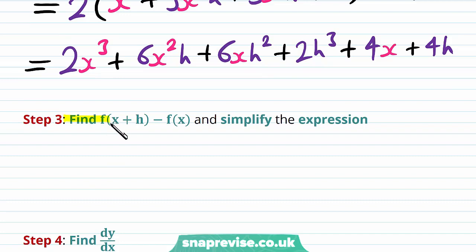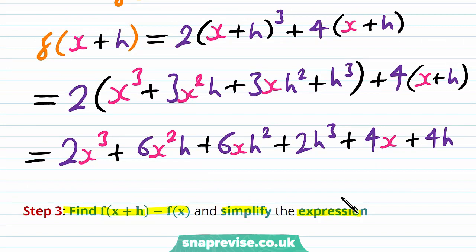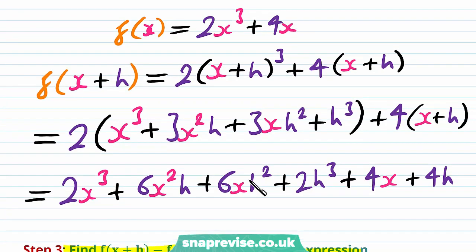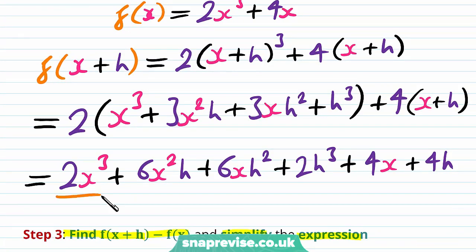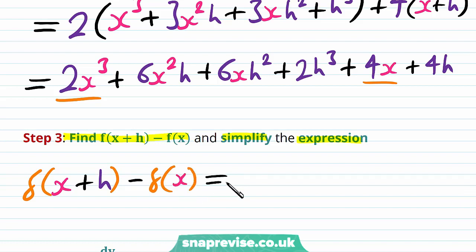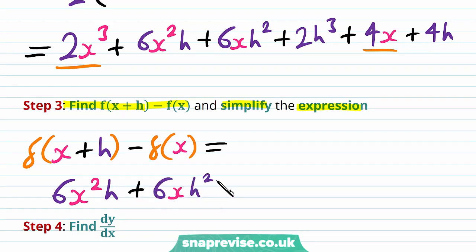Our third step is to find f(x+h) - f(x) and simplify. Identifying the terms of f(x) = 2x³ + 4x within f(x+h), we can see the 2x³ and 4x terms. After subtracting, the remaining terms give us f(x+h) - f(x) = 6x²h + 6xh² + 2h³ + 4h.